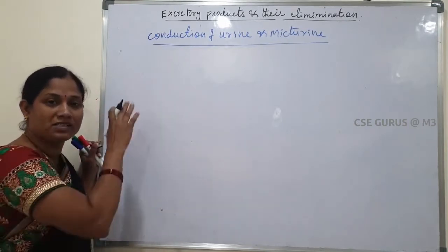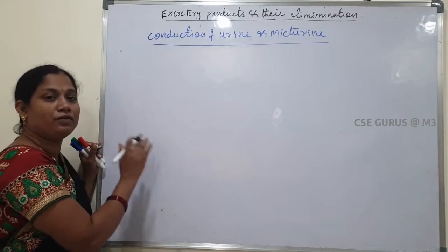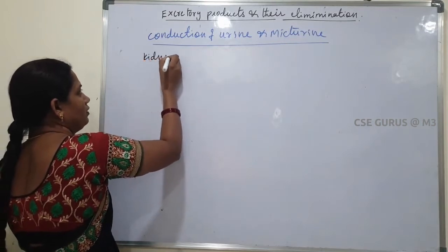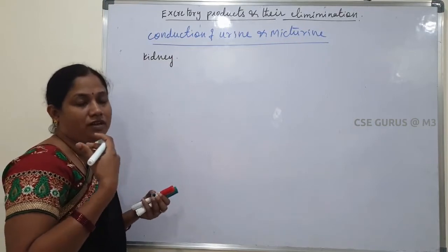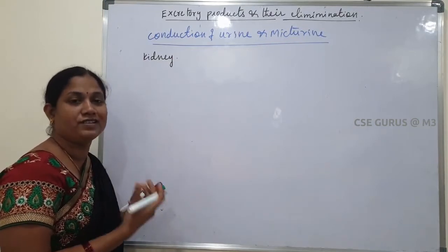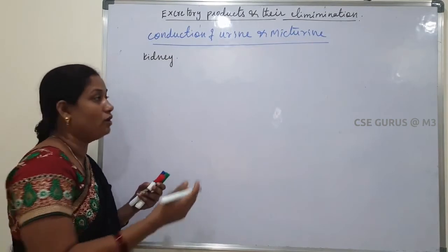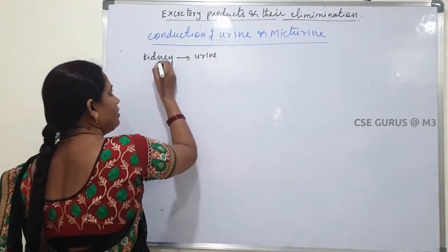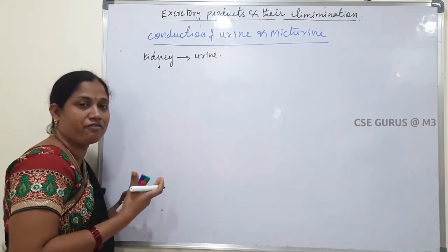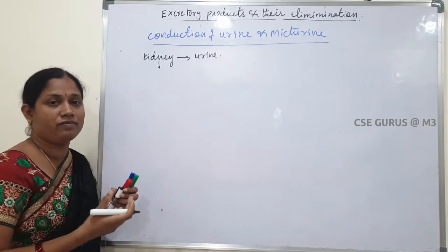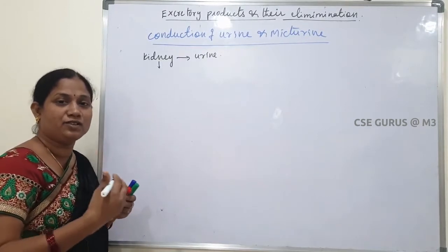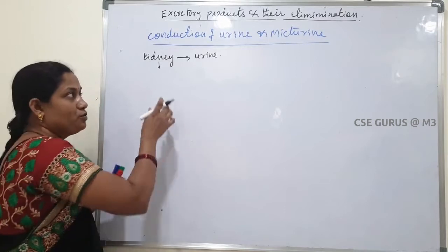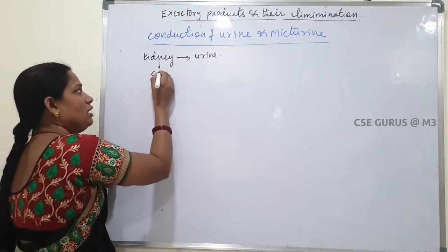Conduction of urine means the passage of urine. First of all, urine is formed in the kidney, where nitrogenous waste products are filtered to form urine. In the nephron structure, blood undergoes the filtration process — glomerular filtration takes place. As a result, the blood is filtered to form nephric filtrate. Then selective reabsorption takes place to finally produce hypertonic urine in the collecting duct.